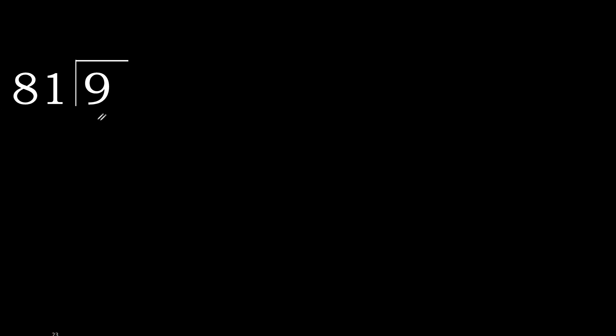9 divided by 81. Since 9 is less than 81, we cannot divide directly, so we complete with 0. Here, 0 point.